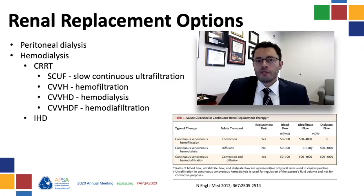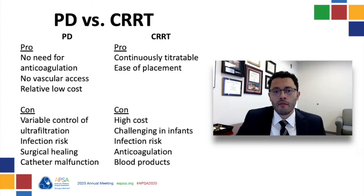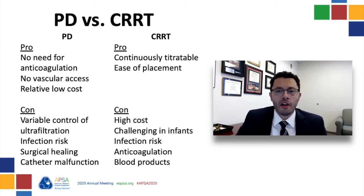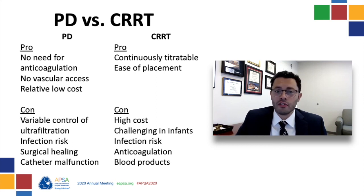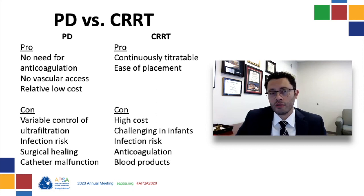Are there any other options for renal replacement therapy besides CRRT? The main options for renal replacement in our patient are peritoneal dialysis and CRRT. CRRT itself comes in many different flavors depending on the need for hemofiltration and/or dialysis. PD is great because it obviates the need for anticoagulation, avoids having to obtain vascular access, and is of lower cost. The downsides to PD include the lack of being able to accurately titrate fluid removal, a high risk of infectious complications including peritonitis, the need for surgical placement with sufficient time for wound healing, and catheter malfunctions. CRRT is great because it is easily titratable and can be initiated at the bedside. The downsides include high cost, challenges in infants, risk of catheter-associated line infection, and requirements for anticoagulation and exposure to blood products.